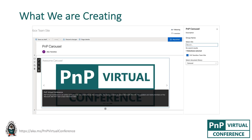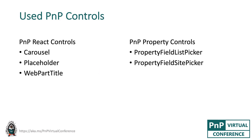And let's jump to the code and start creating our beautiful SPFx web part using both React controls and PropertyPane controls. So, what are we creating? Let's assume we need to develop a web part that displays a carousel of images. The images are stored in some document library, and we want to provide ability to select a site and a document library where these images are stored. To implement the functionality, we'll use the next PNP controls: Carousel to display the carousel itself, Placeholder to notify that the web part hasn't been configured yet, WebPartTitle to show a custom title for the web part, and SitePicker with ListPicker to select a site and a document library.